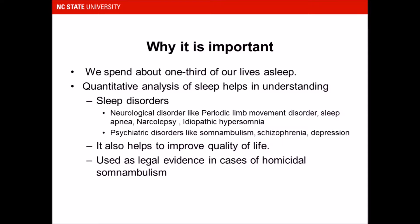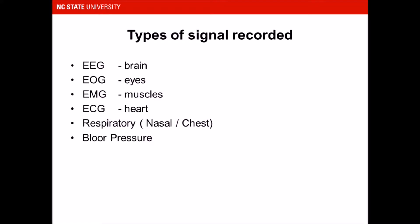Now we will see how polysomnography is done and what types of signals are used. The following signals are recorded in a typical polysomnography: first is EEG, which records brain activity; EOG, which is electrooculogram, which records activity of the eyes — we will shortly see why recording EOG is important; we record EMG to see muscle activity, which can be used to diagnose periodic limb movement disorder; and we record ECG to see how the heart is working and whether there are any abrupt conditions occurring while asleep.